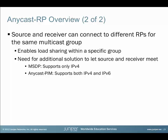To let the source and receiver connect to each other, there must be a way for the rendezvous points to exchange information about sources, receivers, or both. Previously, we used MSDP to exchange source information between rendezvous points, which can be used for inter-domain multicast designs. The disadvantages of MSDP are that it only supports IPv4 and requires additional protocol configuration. A more recent option is to use Anycast PIM for the exchange of source information, so no MSDP is needed for Anycast RP to function. This solution is also useful if you must support IPv6.